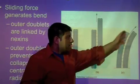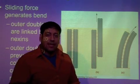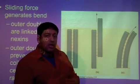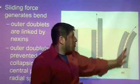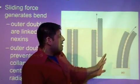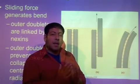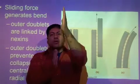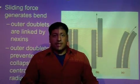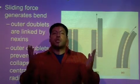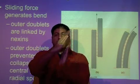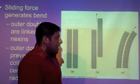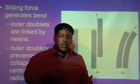In part C, if we keep the nexin connection intact, when dynein triggers the cross-bridge cycle, instead of moving very far or sliding telescopically, the structure bends. Without nexin, one microtubule stays put while the other keeps sliding. With nexin, the motion is limited, so the cross-bridge cycle causes a bending motion rather than a telescopic straight motion. This bending is what generates the sine wave motion in the sperm tail.